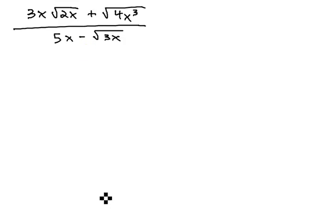And so, to clear it, because we see that subtraction in there, we can't just multiply by the square root of 3x. We're going to have to use a conjugate.